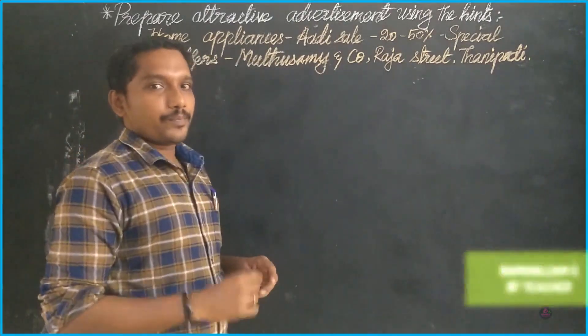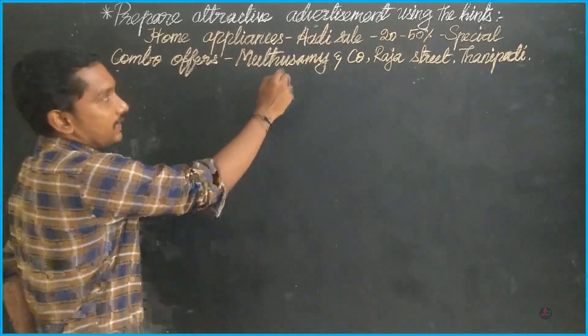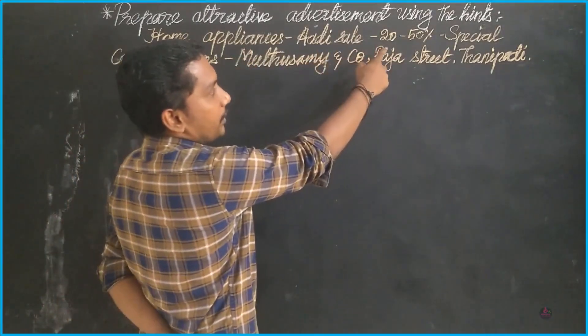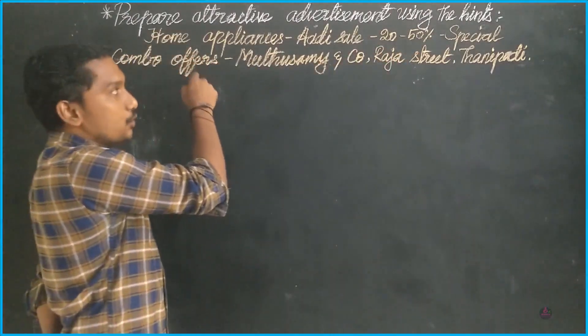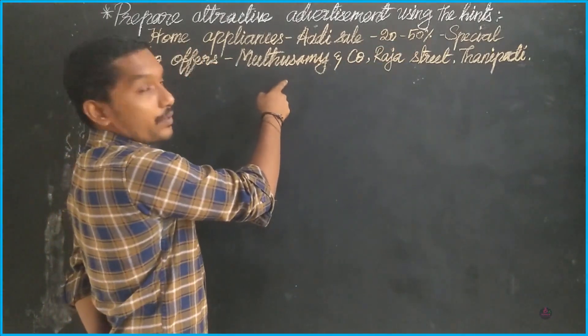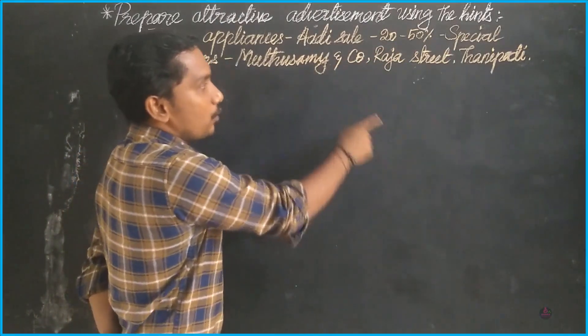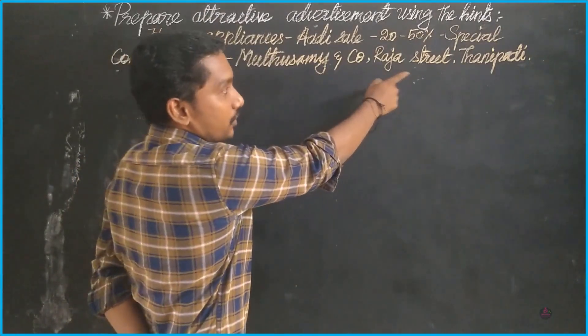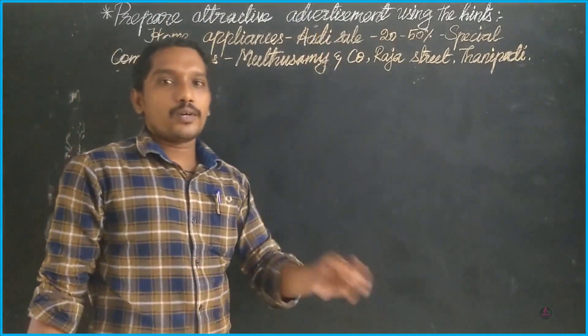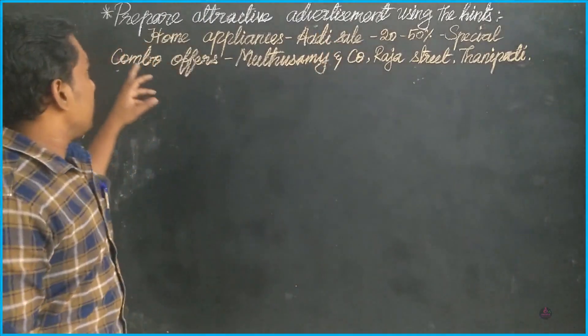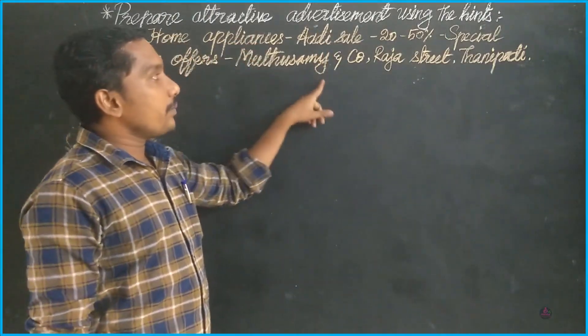Listen first: home appliances, then Audi sale, 20 to 50 percentage of offer, special combo offers are also available. The name of the company or the shop is Muthuswamy & Co and the address is Raja Street, Thanipadi. By using these hints you have to find out what is the topic or head of the shop. The company name is Muthuswamy & Co.